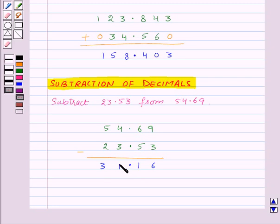So, 54.69 minus 23.53 is equal to 31.16.